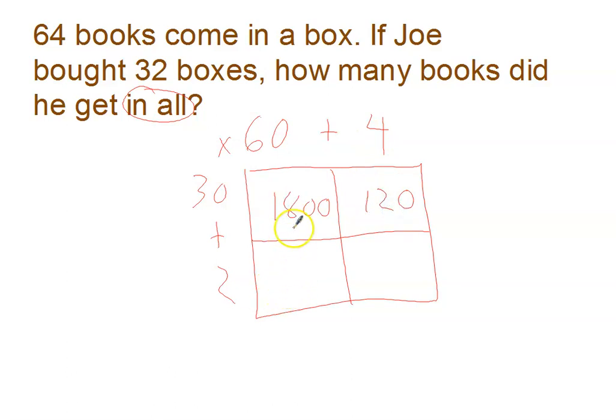This box is two times sixty. One zero to append. And two times six is twelve. And the last box is just two times four is eight. And then I just need to add those up. So one thousand eight hundred. One hundred and twenty. One hundred and twenty. And eight.